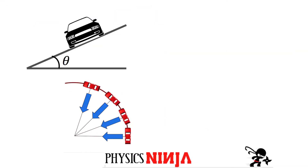So here are two different views of the same picture — a cross-sectional view and a top-down view. The car is going around in a circle, and the bottom picture shows different snapshots as the car moves along this circular path. The first thing you have to ask yourself is: what are all the forces acting on the car when it's going around this circle?